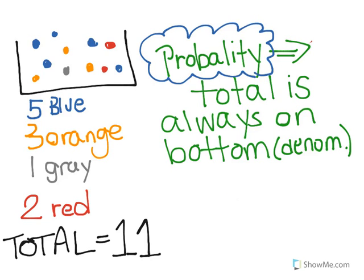Now that we have the total, it's important to know that for probability the total is always on the bottom, or in the denominator spot. So throw the 11 on the bottom.